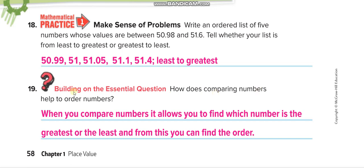How does comparing numbers help to order numbers? When you compare numbers it allows you to find which number is the greatest or the least, and from this you can determine the order. I hope you guys understand. Thank you so much for listening — don't forget to subscribe to Learn Math with Mr. Saad and press the bell icon to get notified for every new video. Have a nice day!